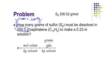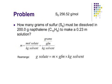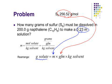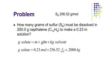We need to solve for grams. I know the molar mass, I know the kilograms, and I know the molality, so I need to rearrange the equation to isolate grams. I always like to rearrange equations before plugging in numbers — it's always safer. When I rearrange, grams of solute equals the molality of the solution, which is 0.23 mol/kg, times the molar mass of the solute, which is 256.52, times the kilograms of solvent.